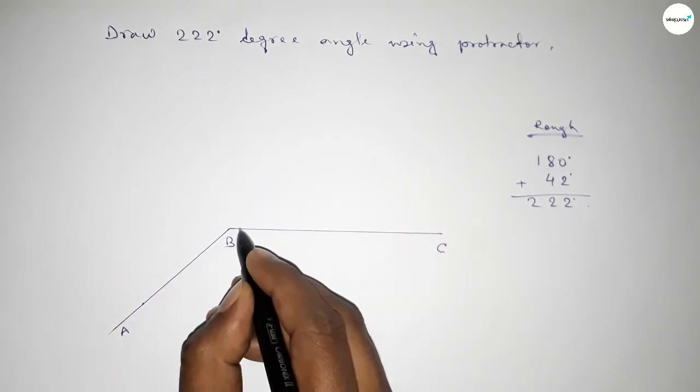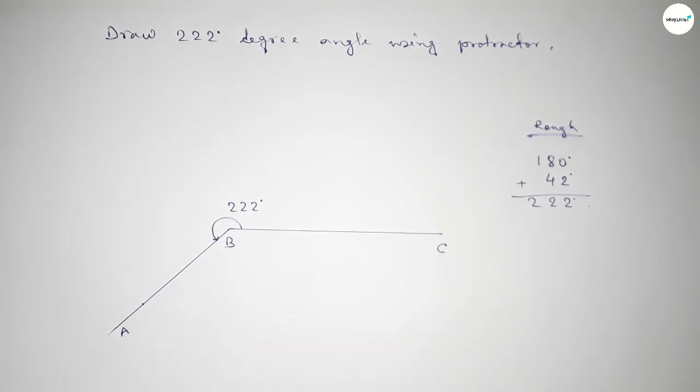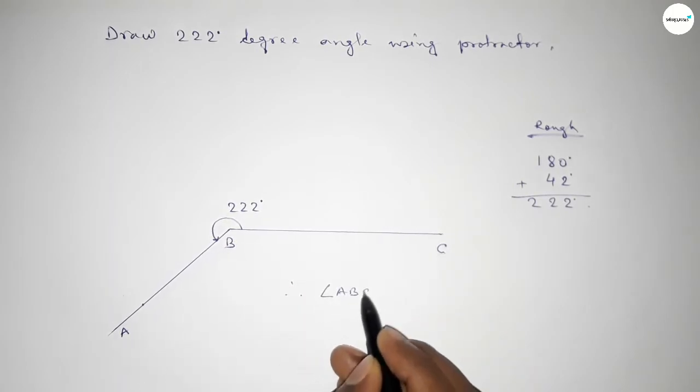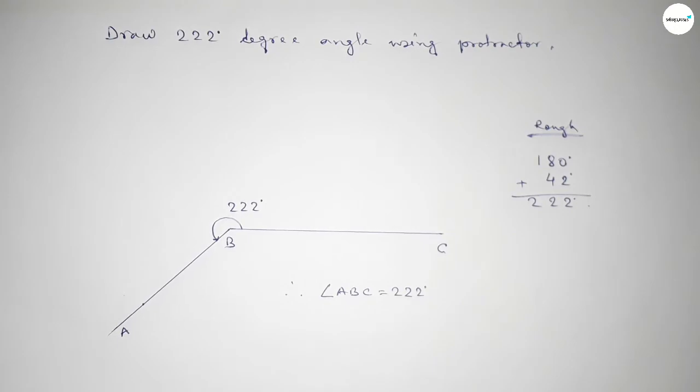So angle ABC up to this is 222 degree angle. Therefore angle ABC equals 222 degrees. That's all.